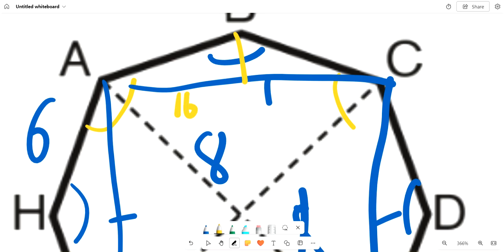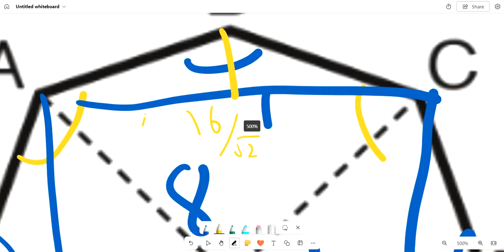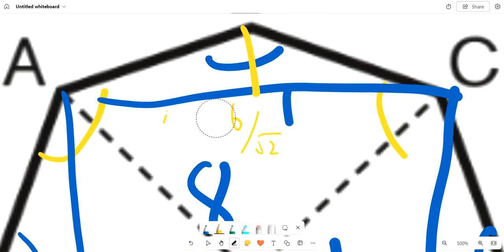16 over root 2, because of the 45-45-90 triangle we see here from the square. This equals 8 root 2, and therefore 4 root 2.